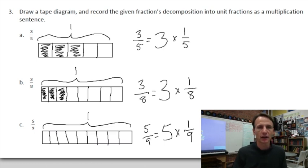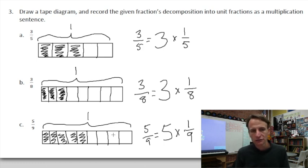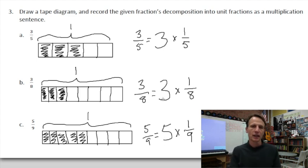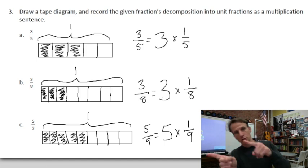I don't want to neglect shading in five-ninths: one, two, three, four, five. Five of the nine are shaded — that's the five-ninths, or five times one-ninth. Everything's beautiful. Moving on.